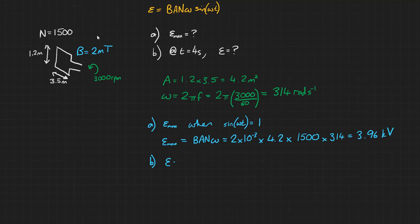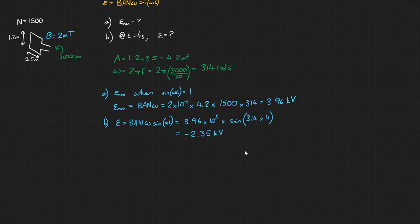And for part B the EMF at 4 seconds will be equal to BANω multiplied by sin ωt. So we can use our answer from part A: 3.96 times 10 to the 3 volts multiplied by the sin of 314 radians per second multiplied by 4 seconds, which gives us an EMF of minus 2.35 kilovolts.